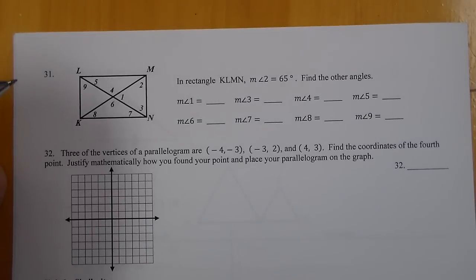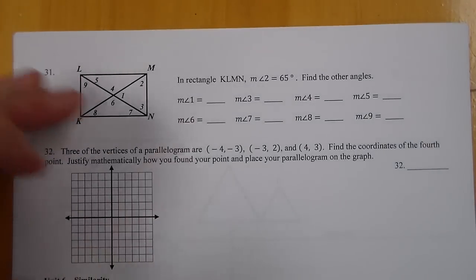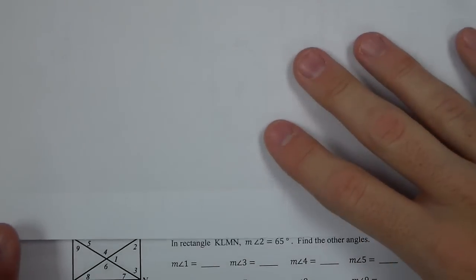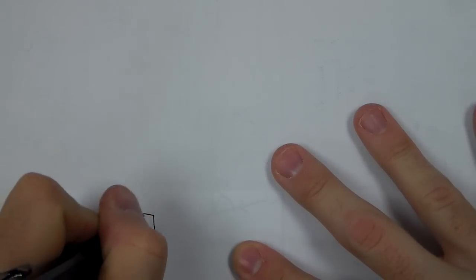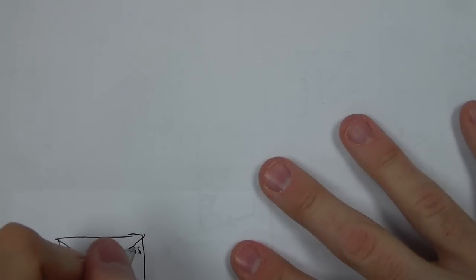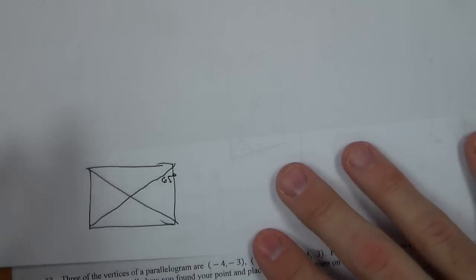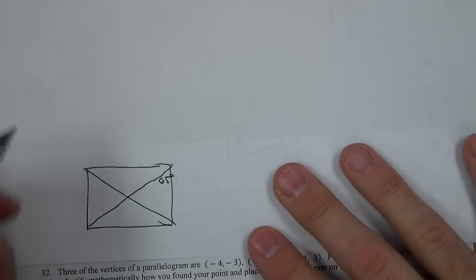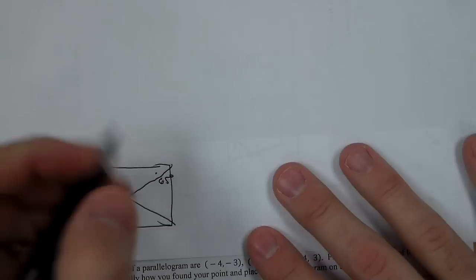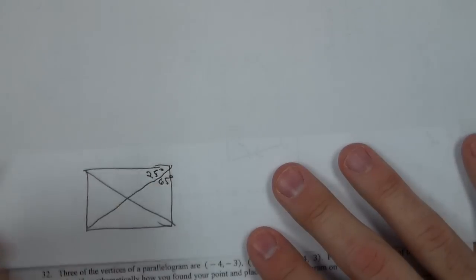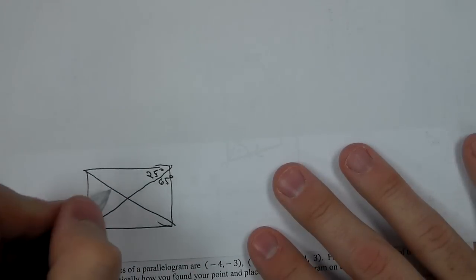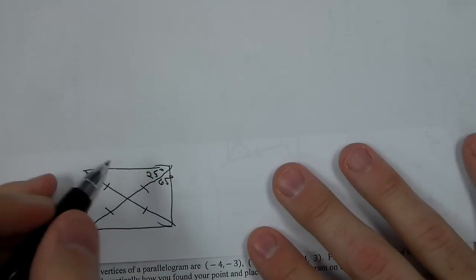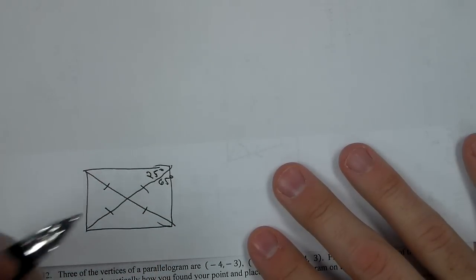In number 31, we need to find angles. So I'm going to redraw this one and find all my parts, and then we can fill it in. I think this one kind of gets tough depending on the order you want to solve it. So let's go draw a rectangle, and angle 2 right here is 65 degrees. Now in a rectangle, we know they're all 90 degrees for all the right angles, so this would be 25 degrees.